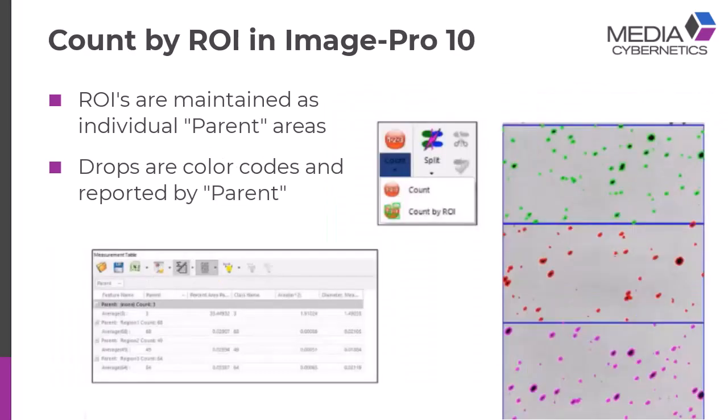With ImagePro10, count by ROI, we added a new feature under the count. The whole idea behind count by ROI was that you could have your regions, your ROIs set up, as many as you need. And then when you count by ROI, it would maintain these parent regions, and we would report the data per region, which is what you're seeing here. And it would also be color-coded by region. The data table would correctly report all of that data per region now, or per parent.